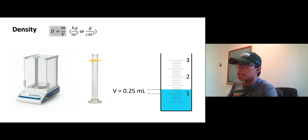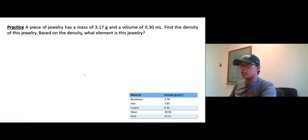Alright, let's have you do this on your own. A piece of jewelry has a mass of 3.17 grams and a volume of 0.30 milliliters. Find the density of this jewelry. Based on the density, what element is this jewelry? Let's take a look. I'll go real quick. Find the density, then you can compare to the density of pure metals in here. Think about which one is the closest.